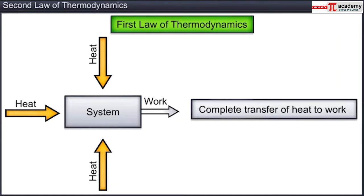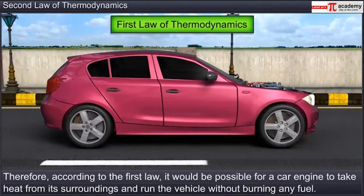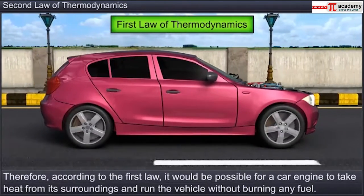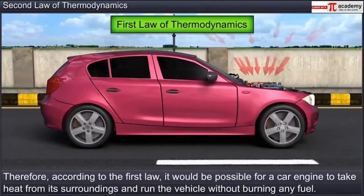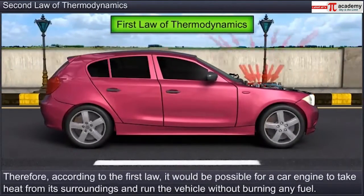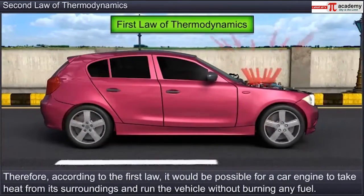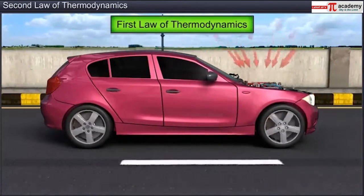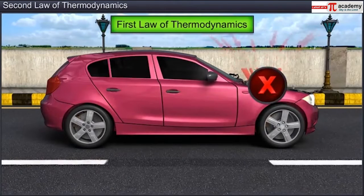One form of the first law allows us to convert heat completely into work. Therefore, according to the first law, it would be possible for a car engine to take heat from its surroundings and run the vehicle without burning any fuel. However, it seems that nature has put a constraint on such processes.